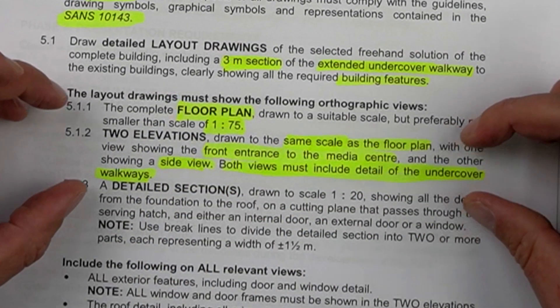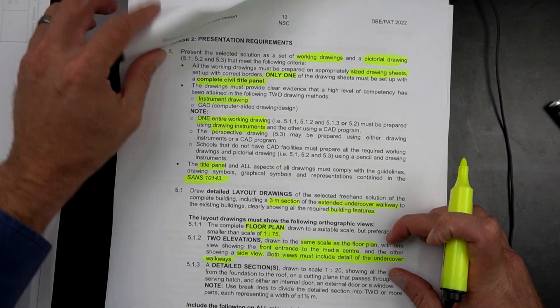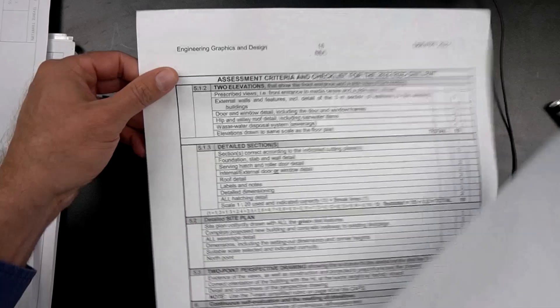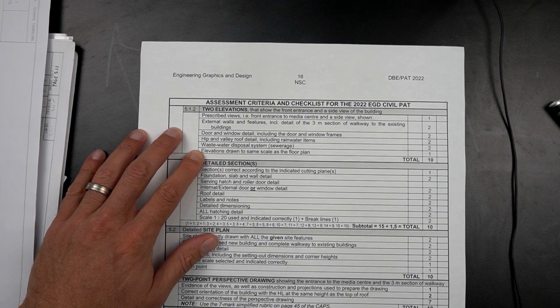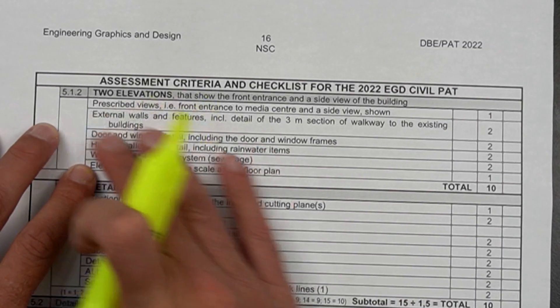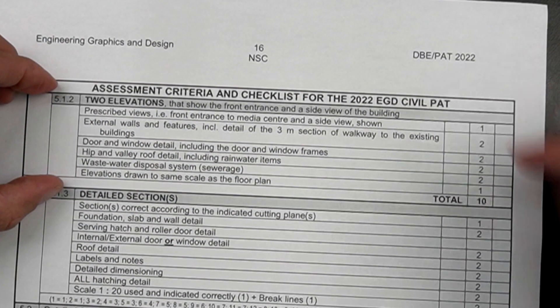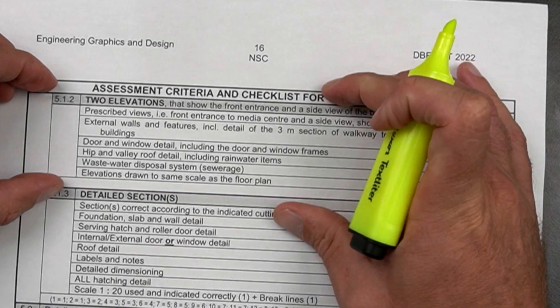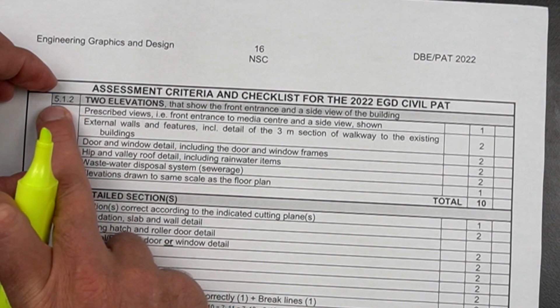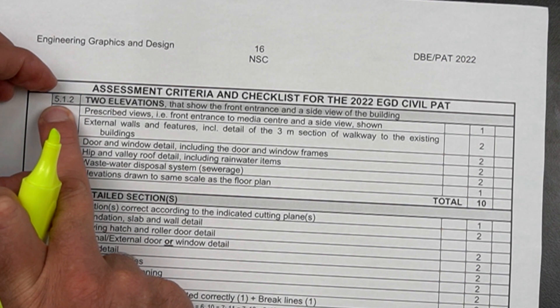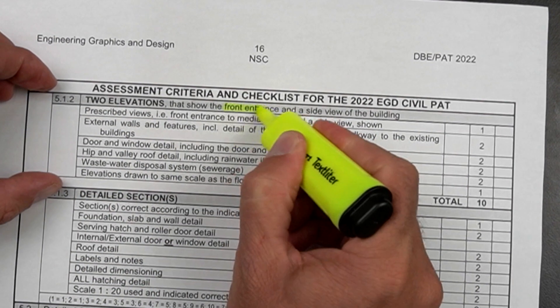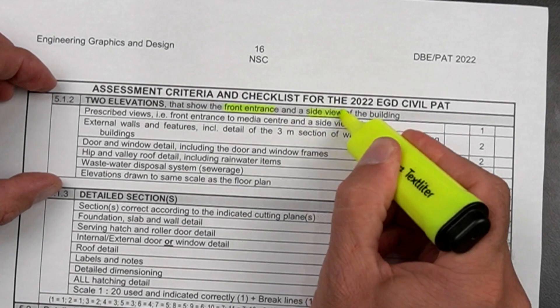If you check this paragraph with your actual checklist, you will see there is some similarities. Here again, this is what you need to tick off as you do your drawings. The two elevations will be numbered 5.1.2 and they will show the front entrance in the one and a side view in the other.